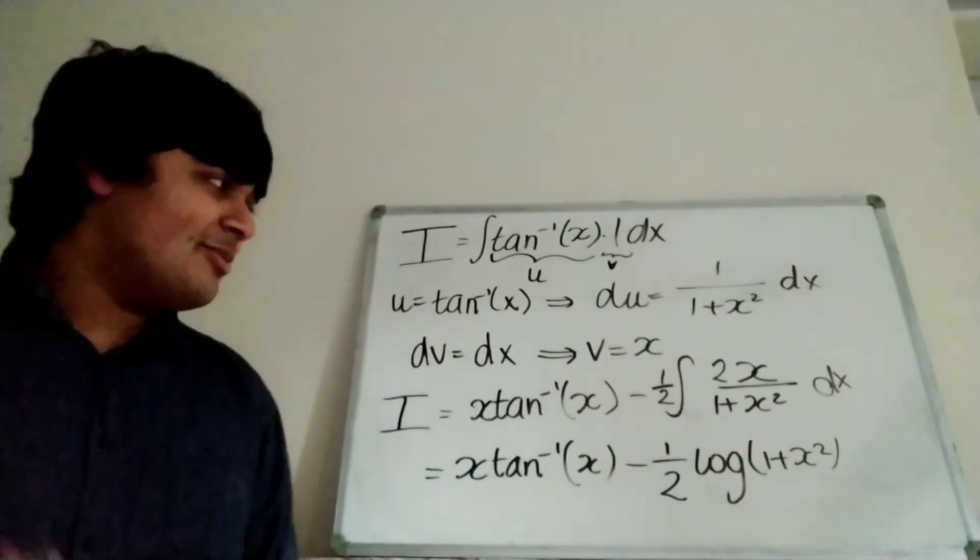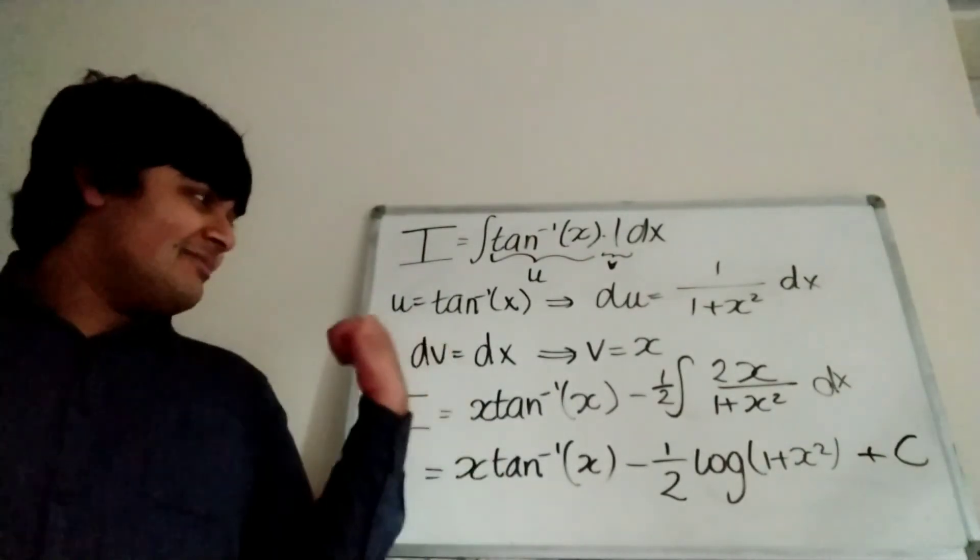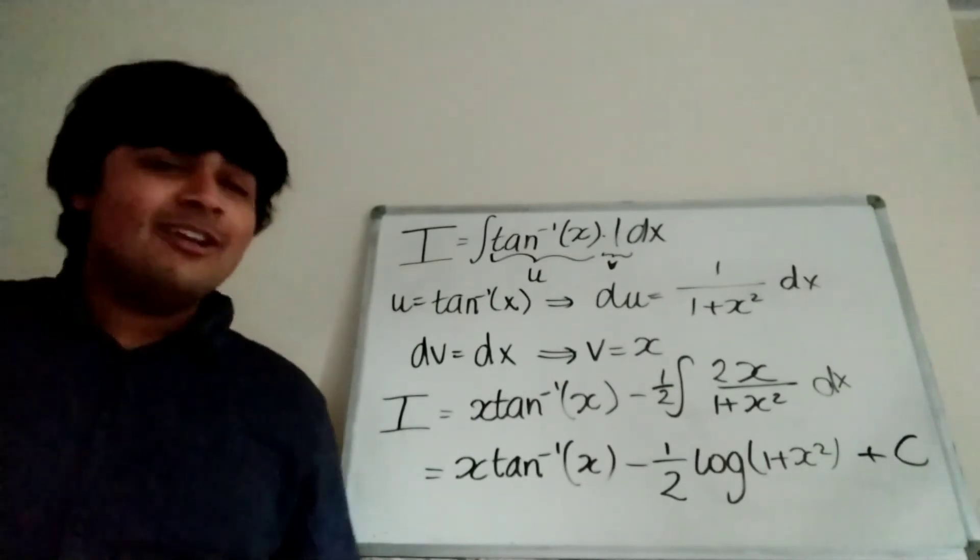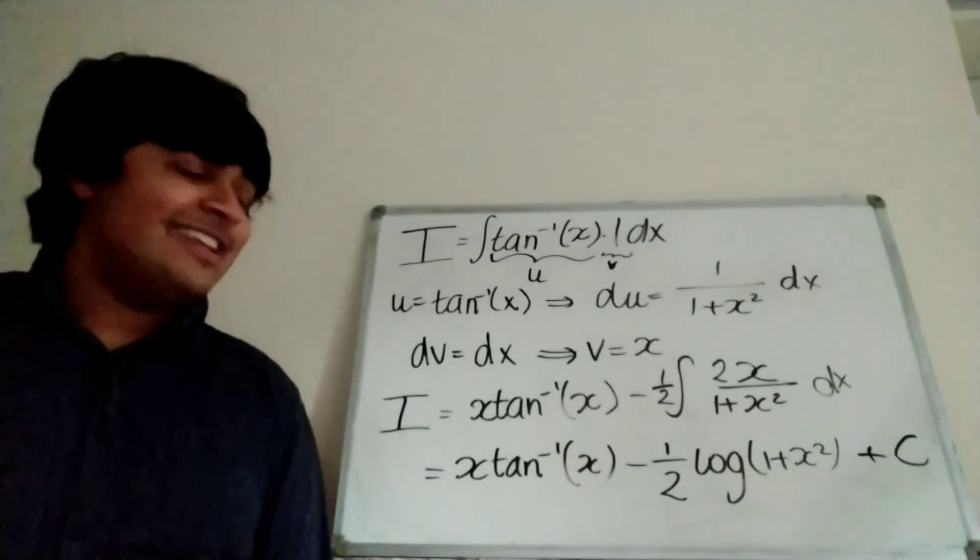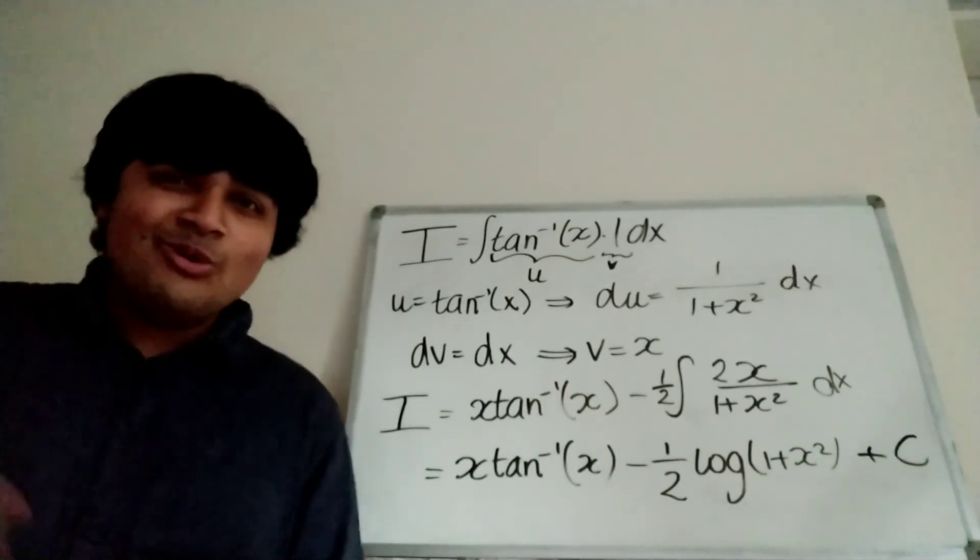But of course, because it's an indefinite integral, we have to have a plus C. And that works out what I is. So I is x inverse tangent of x minus 1 half log 1 plus x squared plus an arbitrary constant C. And that's how you evaluate the integral of inverse tangent of x all in under 3 minutes.